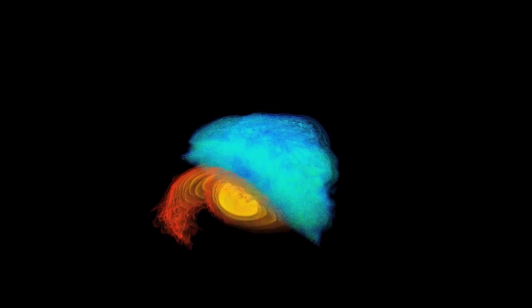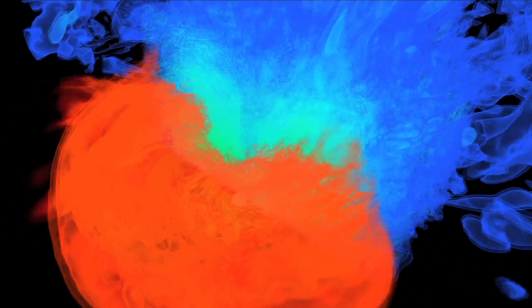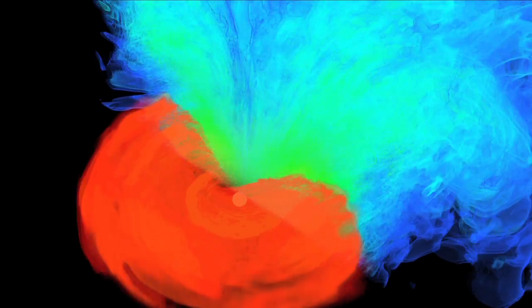The new simulation shows two neutron stars merging to form a black hole surrounded by super-hot plasma. On the left is a map of the density of the stars as they scramble their matter into a dense hot cloud of swirling debris.